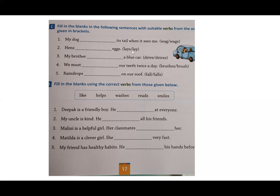Second: hen dash eggs. The options given are lays or lay. Your subject, hens, is plural — more than one. So with a plural subject we use lay. Hens lay eggs. My dog wags its tail; hens lay eggs. When there is an S in the subject, we do not add S to the verb. Remember this and fill in the remaining three.